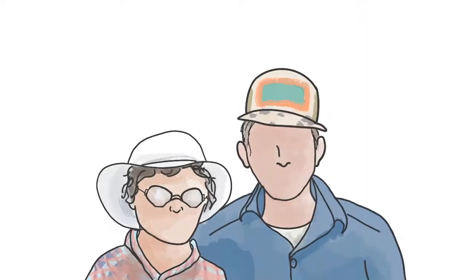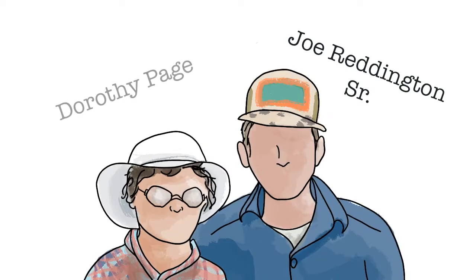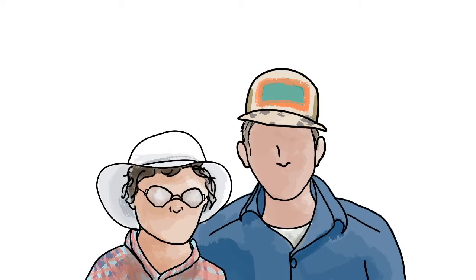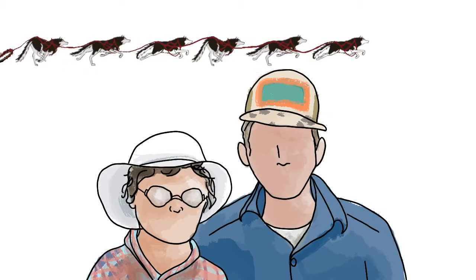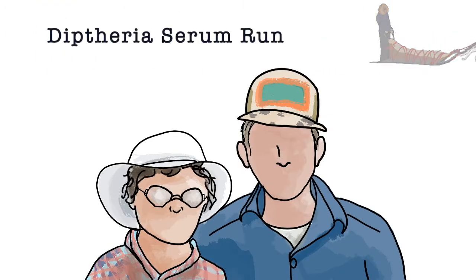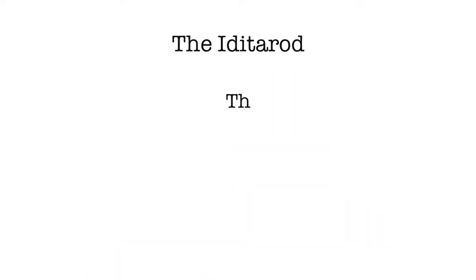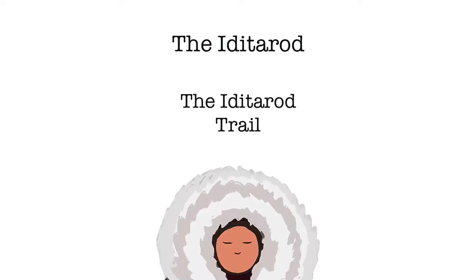Around 50 years later, Joe Reddington Sr. and Dorothy Page decided to organize a race to honor the Alaskan tradition of dog sledding and commemorate the 1925 diphtheria serum run. This race is what we know today as the Iditarod and it is named after the Iditarod Trail, which was historically used by native Alaskans.